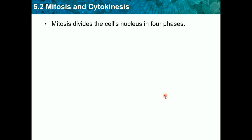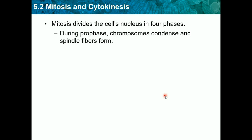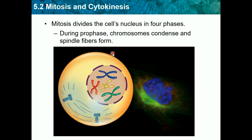Mitosis divides the cell's nucleus in four phases, and you can remember them with PMAT. P is for prophase, where chromosomes condense and spindle fibers form. In an image of prophase, you can see the chromosomes and centrioles sending out spindle fibers which will help pull apart the chromosomes. Also in prophase, the nuclear membrane around the nucleus starts to break down and dissolve, so the DNA can escape and get split in half.